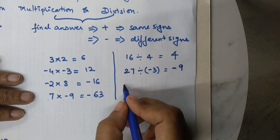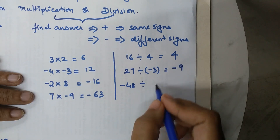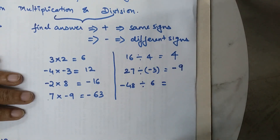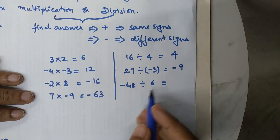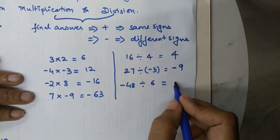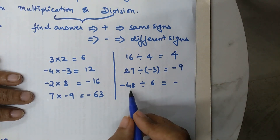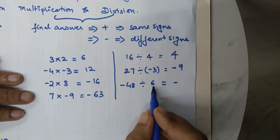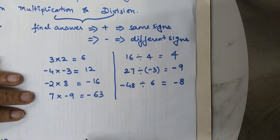What about minus 48 divided by positive 6? Both are having different signs, so the final answer has a negative sign. 48 divided by 6 is 8, so the final answer is negative 8.